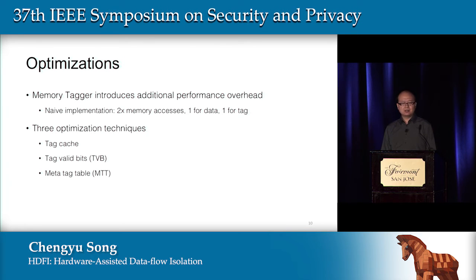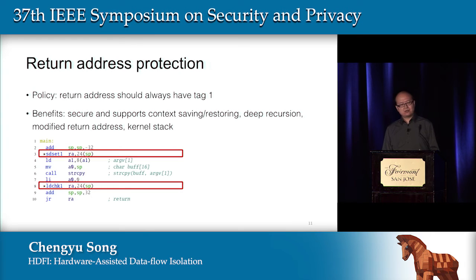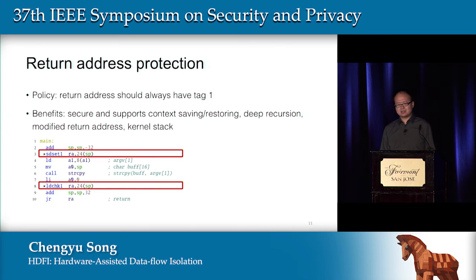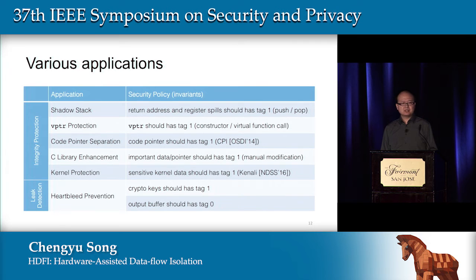If a line of the tag table is zero, we simply don't load it from memory or write it back. With this feature, let's go back to our stack overflow example and see how HDFI defeats the attack. The implementation is quite simple — we enforce one policy: the return address should always have tag zero. This is easily enforced by using SD-set-one to store the return address and LD-check-one when loading it. Compared to existing hardware-based shadow stacks, our implementation is very simple, flexible, and can support features like context saving, restoring deep recursion, modified return addresses, and kernel stacks. Beyond return address protection, to demonstrate HDFI's flexibility, we implemented a variety of other security applications including Vtable protection and code pointer separation, which protects control data, and standard C library enhancement and kernel data protection, which protects the integrity of non-control data.